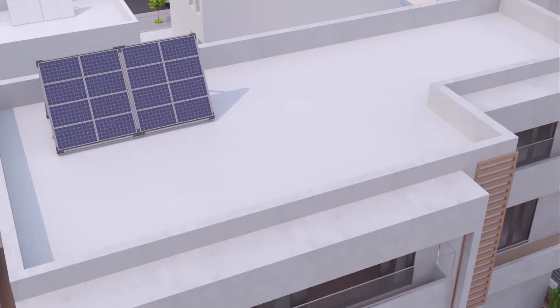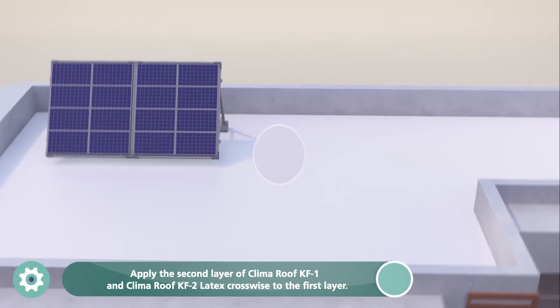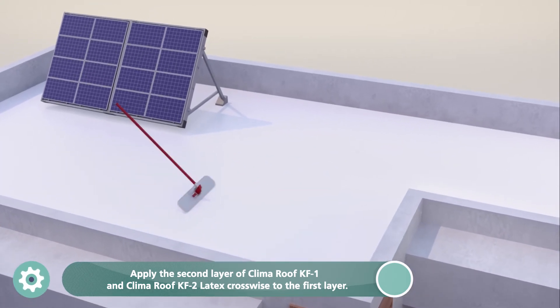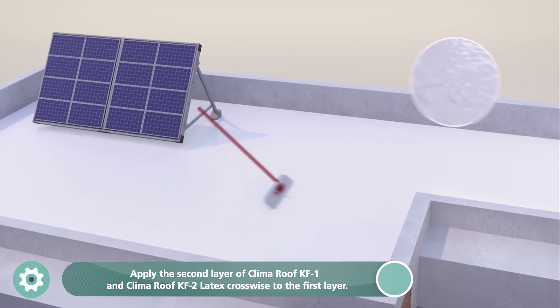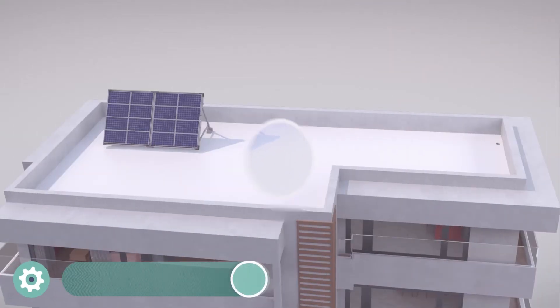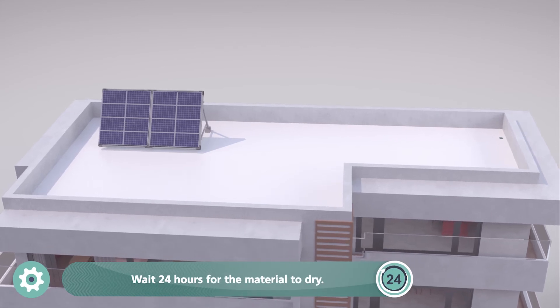The application of a second waterproofing layer of Klima Roof KF2 with latex mortar cross wire to the first layer should follow over the entire surface. The mesh should be embedded into Klima Roof KF2 so that the layer works as anti-crack protection.